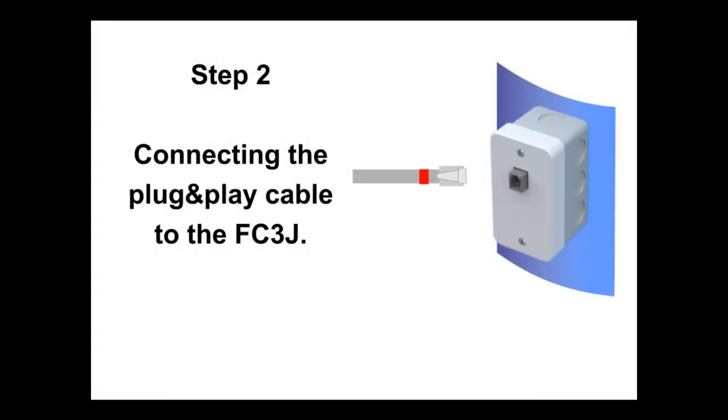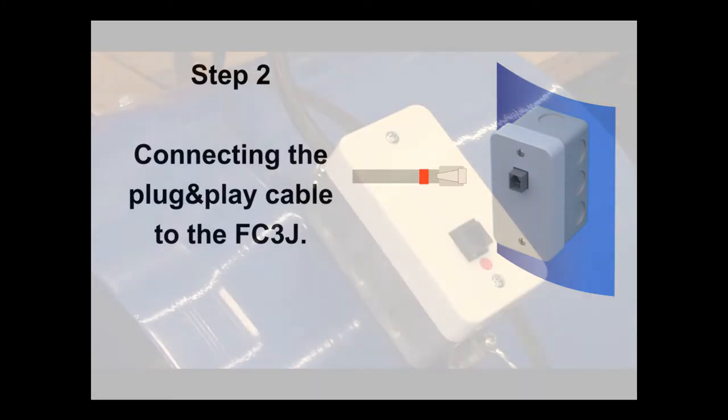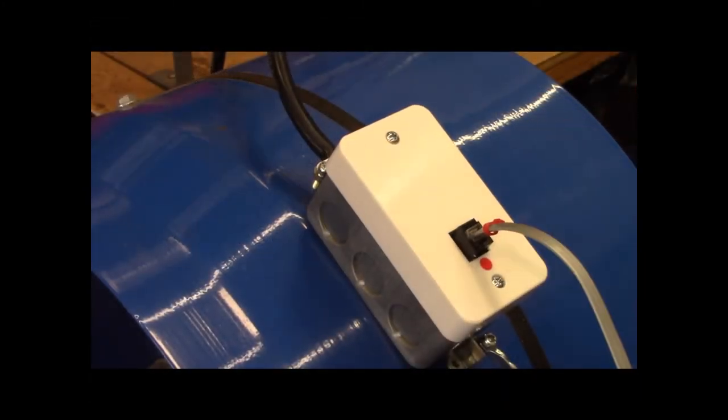Step 2 is connecting the plug-and-play cable to the FC3J on the fan. Insert one end of the cable into the FC3J, making sure the connector clicks. Only use the cable that's supplied.